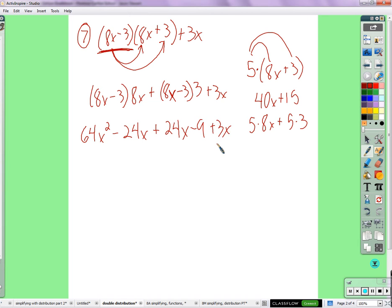And there's a plus 3x there at the end. 64x squared plus 3x. Plus 3x minus 9. That was pretty easy, right? Because we get a negative 24x plus 24x. They cancel each other out and get zero there.